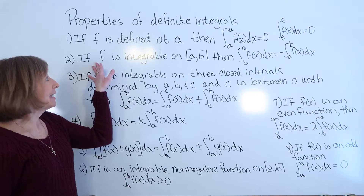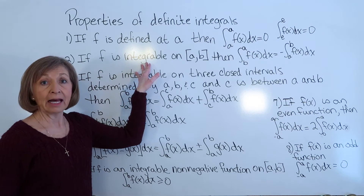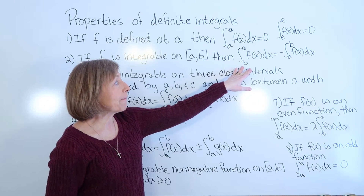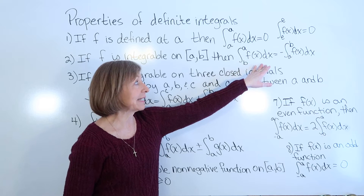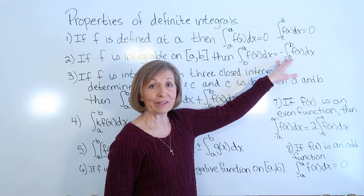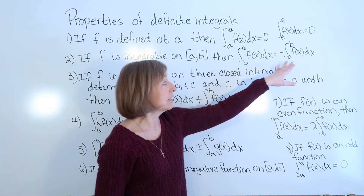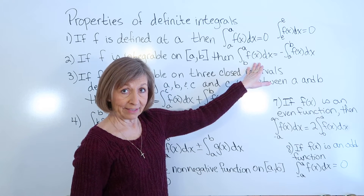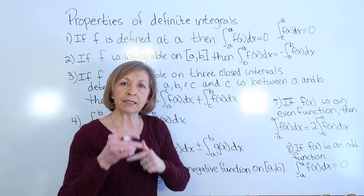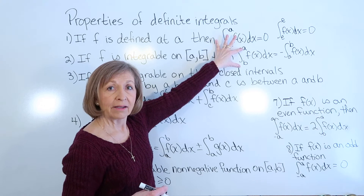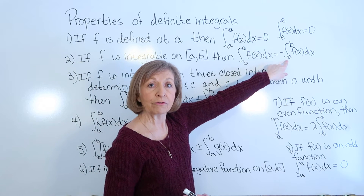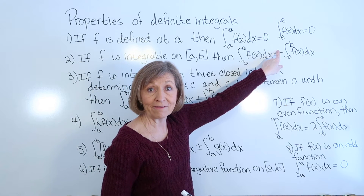The second property: if f is integrable on a closed interval, then the integral from b to a of f of x dx is equal to the opposite in sign of the integral from a to b of f of x dx. If you exchange the lower and upper endpoints, you change the sign of the definite integral.